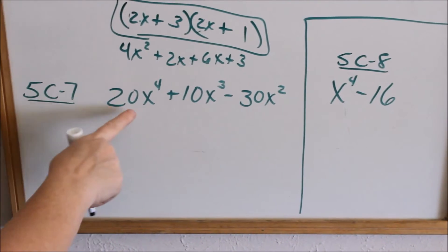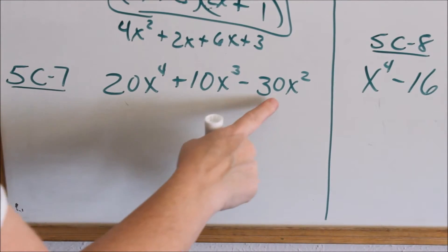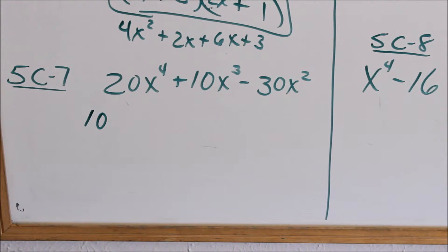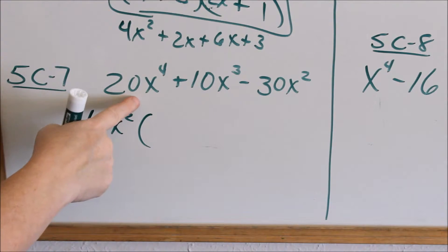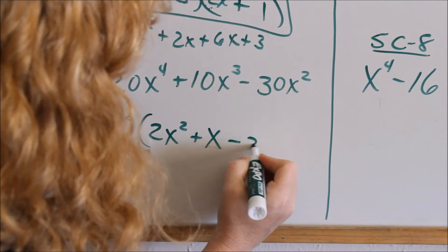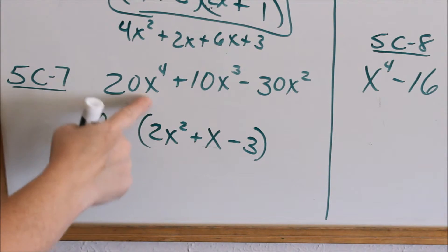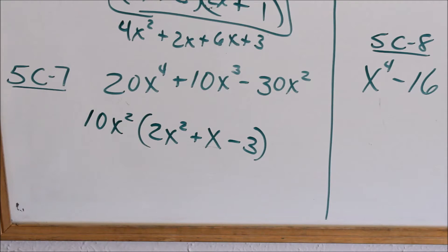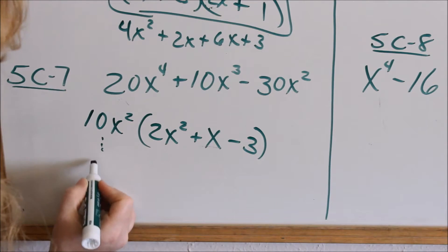Now let's look at 5C7. When I see a coefficient out in front, the first thing I always need to check is can I factor something out? Looking at the numbers — 20, 10, 30 — I can factor out a 10. They all have an x in them: x to the 4th, x cubed, x squared. The most I can factor out is the smallest exponent, so I can factor out an x squared. If I factor out 10x squared, what's left is 2x squared plus x minus 3. Going back and distributing: 10x squared times 2x squared is 20x to the 4th, times x is 10x cubed, times negative 3 is negative 30x squared. Always make sure you factored correctly.